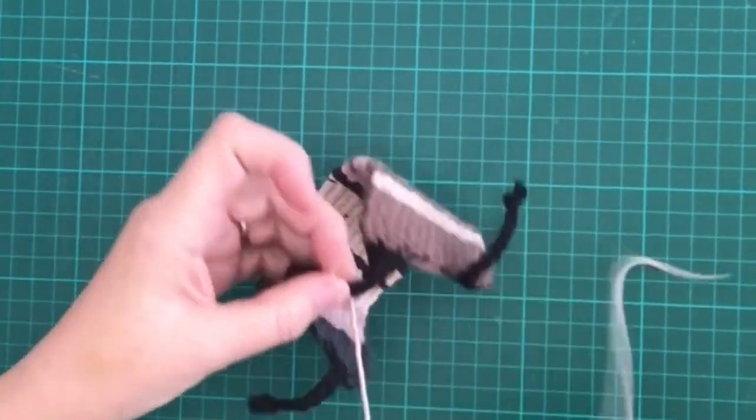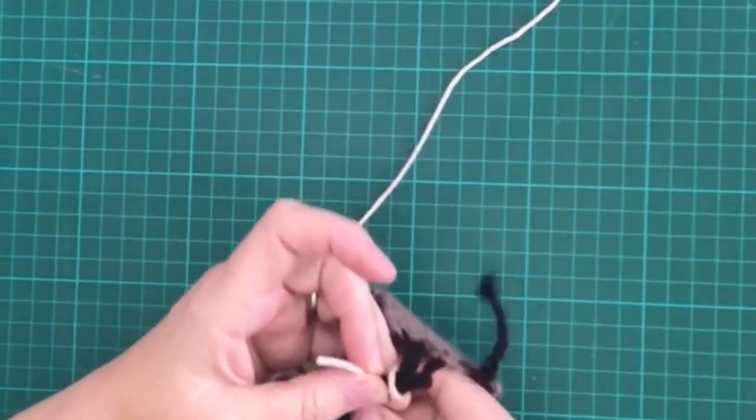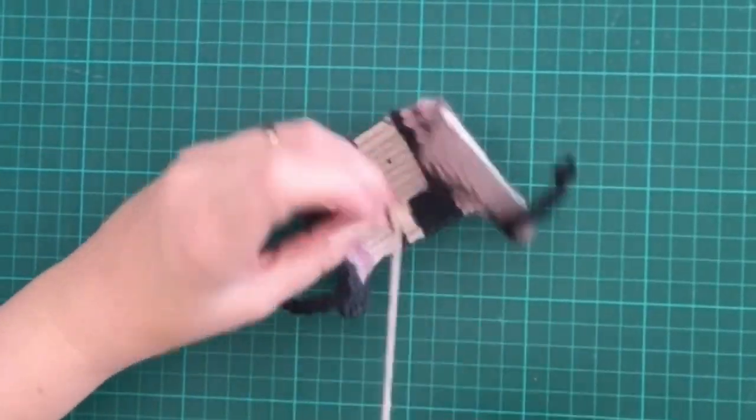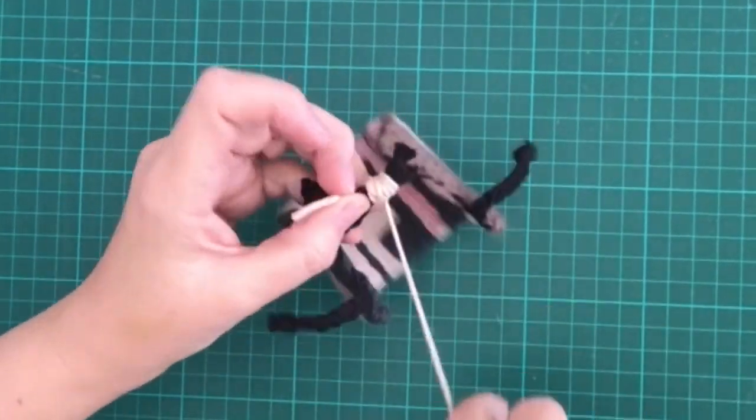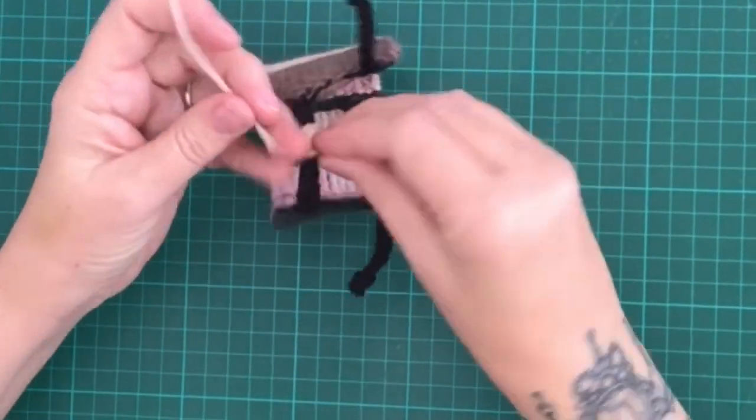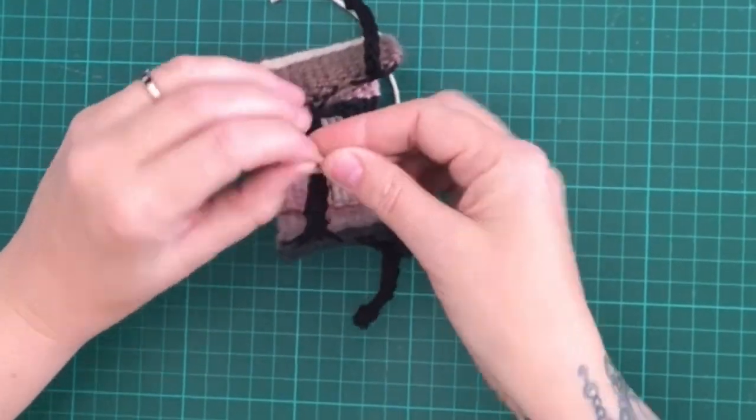Now to make the fastening, I take another piece of thread, put the two plaits together and wind the thread around. I wind it around quite a few times and when I feel that it's nice and secure, I tie it off.